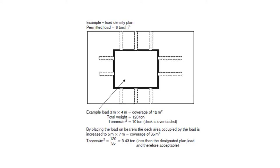Before loading the cargo, you place it on bearers — planks of wood that absorb the weight and spread it over a larger deck area. If you lay out the bearers horizontally and vertically so the cargo sits on them, the effective area increases. In this case, the bearers are laid so the cargo now covers five meters by seven meters — 35 meter square — instead of the original 12 meter square. Dividing 120 tons by 35 meter square gives 3.43 tons per meter square, well within the permitted six tons per meter square.